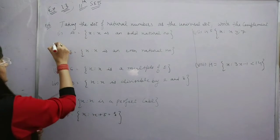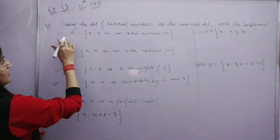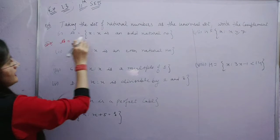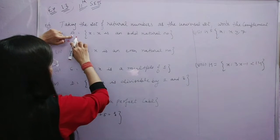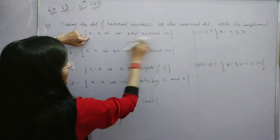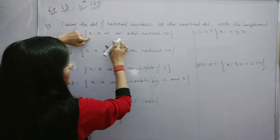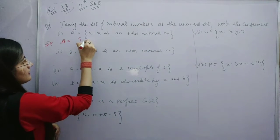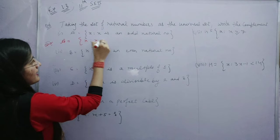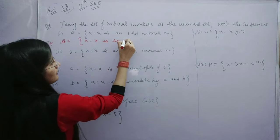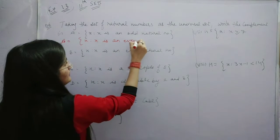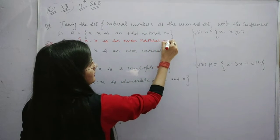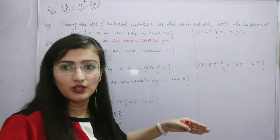What is the set of elements with the property that x is an odd natural number? What is the complement? The complement is x such that x is an even natural number. This means it will be an odd number — if it is not odd, it will be even.